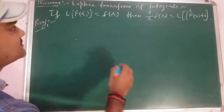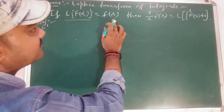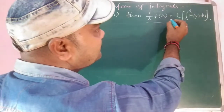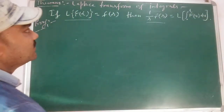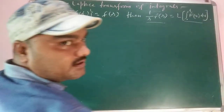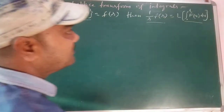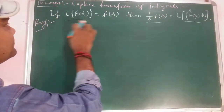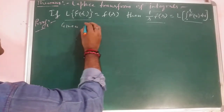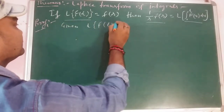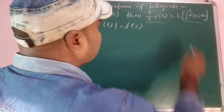The theorem is Laplace transform of integrals. If Laplace transform of f(t) is equal to F(s), then (1/s)·F(s) equals Laplace of the integral from 0 to t of f(u) du. We call this the integral Laplace transform, and F(s) is the Laplace transform. We are given L{f(t)} = F(s) and we will show this.